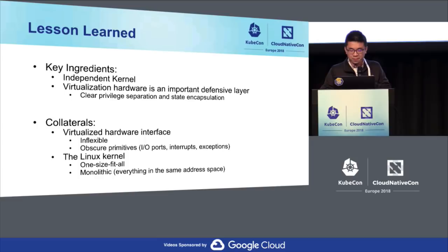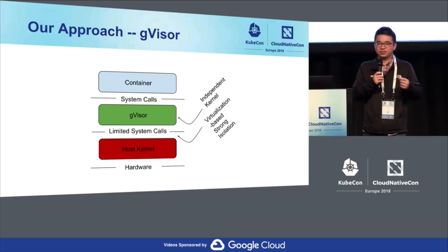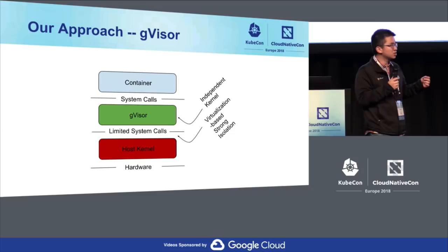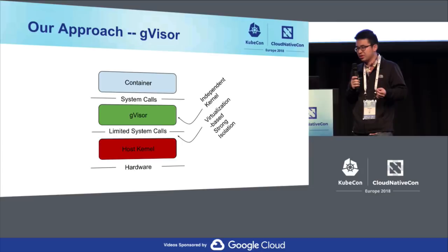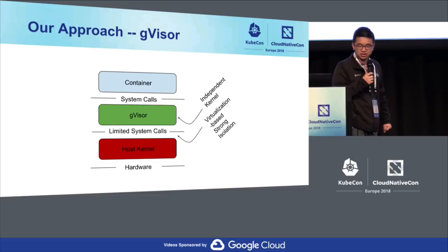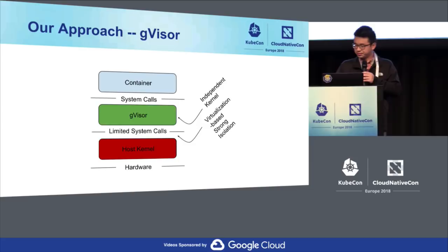I'm really excited to introduce this. We figured out: how about we keep the good properties from the VM solution but without the guest kernel? That's why we spent five years developing this project. GVisor is a user-space kernel written from scratch in Go. We also have certain hypervisor solutions as well as ptrace. The Linux-native way to intercept syscalls. We still have the security properties: an independent kernel out of the TCB and virtualization for state encapsulation.